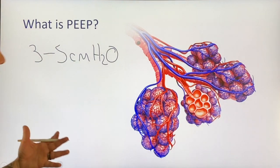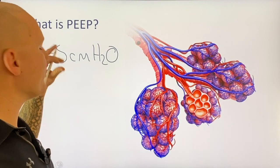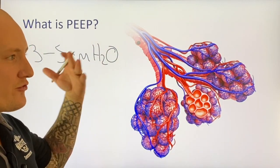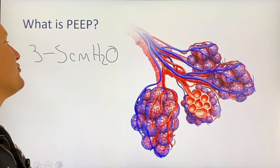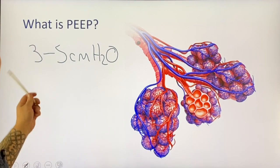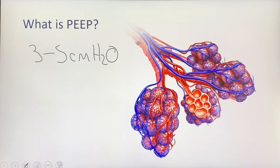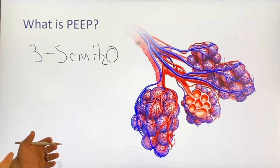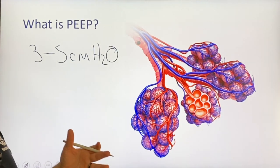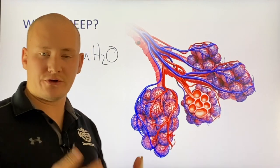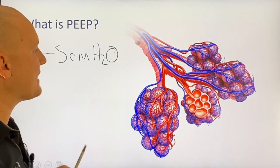This is typically where we'll start with a respiratory distress or respiratory arrest patient — at this physiological PEEP level, setting it to 5 centimeters of water and then increasing and titrating it as the patient needs, as long as there are no contraindications involved. We'll talk about those in a moment.